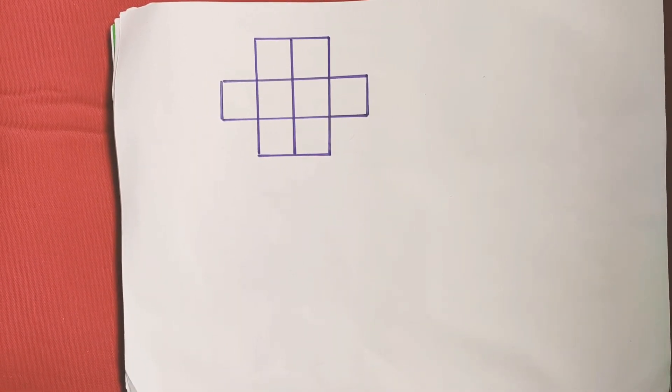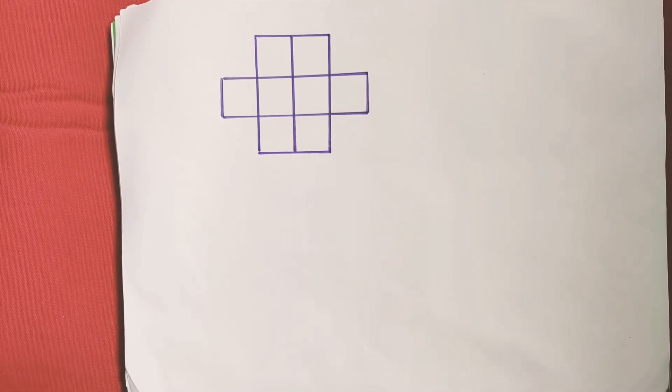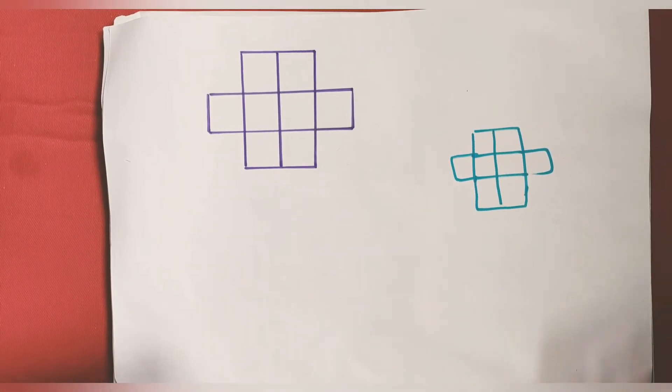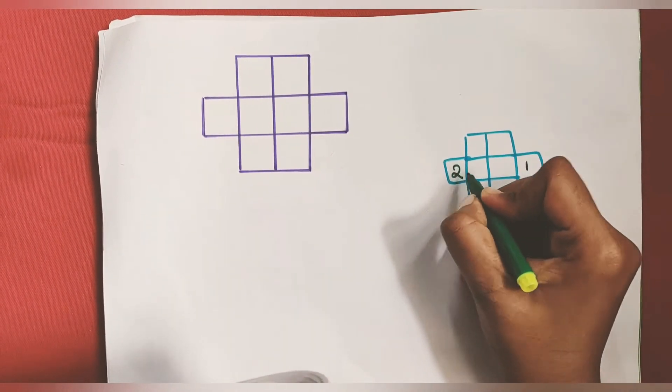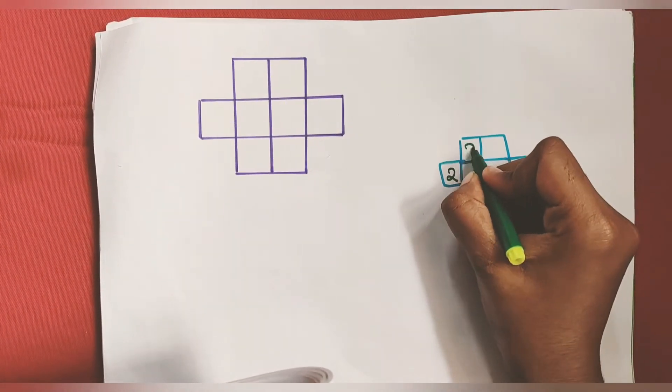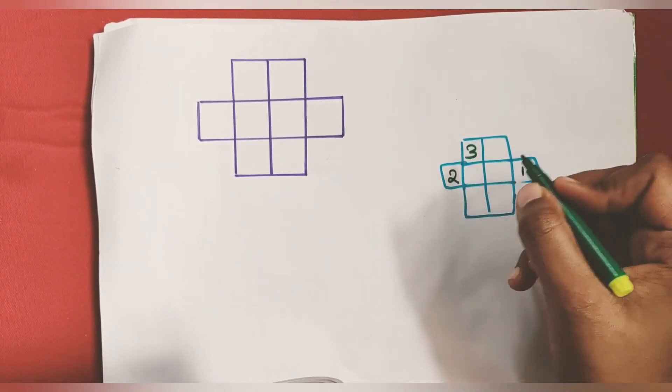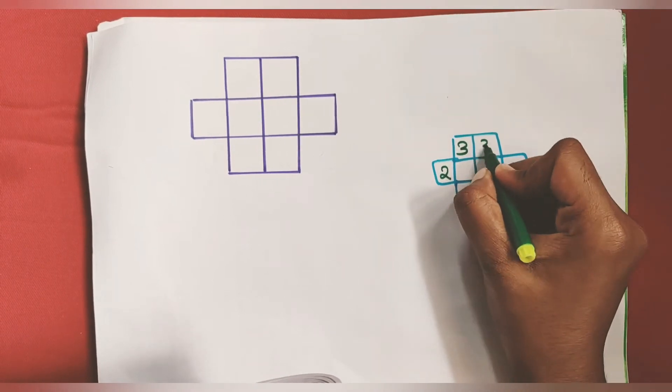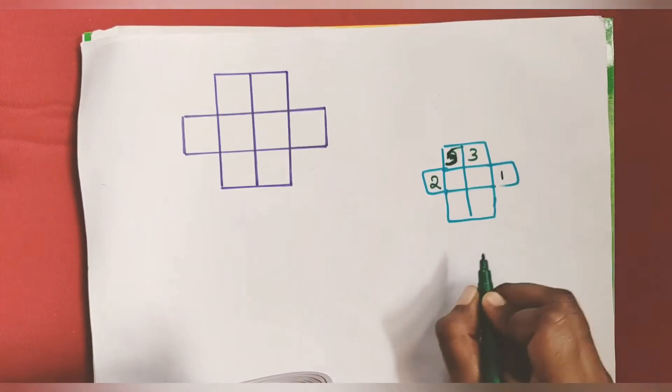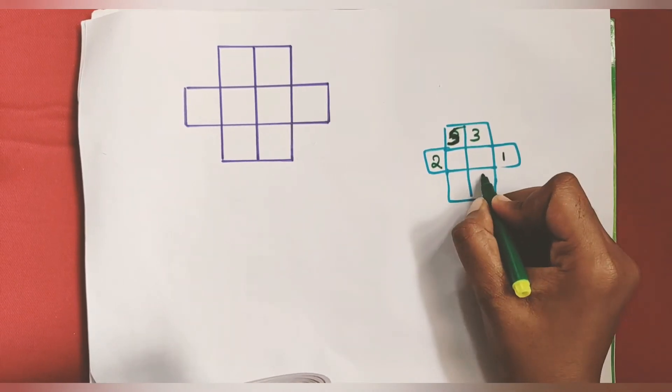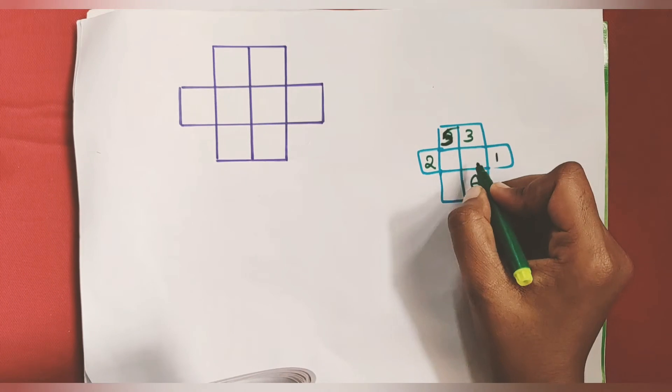There is a simple trick for solving it, but before that we can try the trial and error method. We can place 1 here, 2 here, 3 can't be placed here because it's diagonal to 2, so 3 goes here, then 5 here, 6 here. Now I can't place 7 anywhere because it's adjacent to 6.